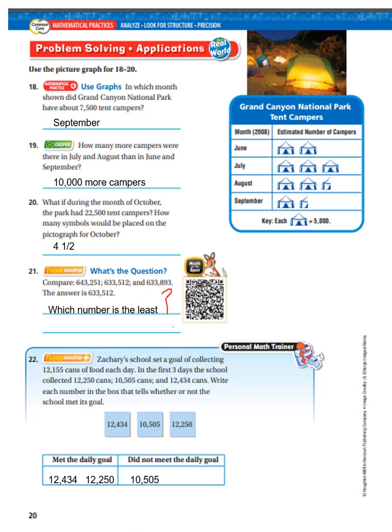It says, Zachary's school set a goal of collecting 12,155 cans of food each day. In the first three days, the school collected 12,250, 10,505 cans, and 12,434 cans. Write each number in the box that tells whether or not the school met the goal. Well, on these days, they met the goal. And on this day, they did not. Because, remember, they set their goal of 12,155.